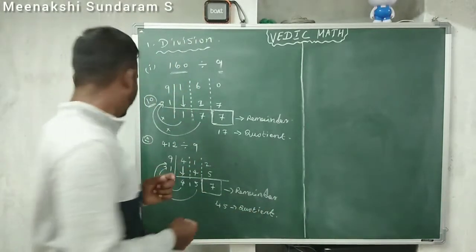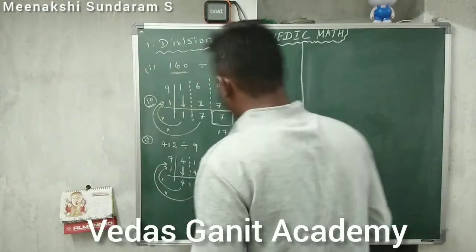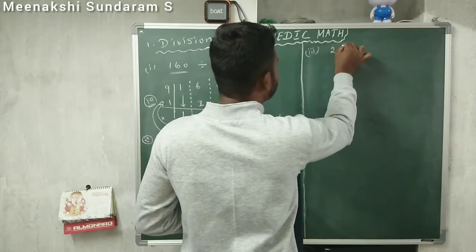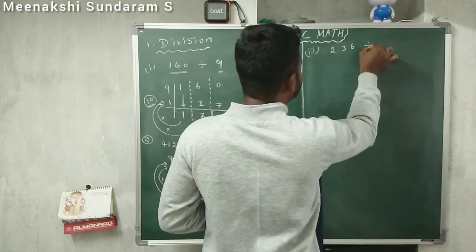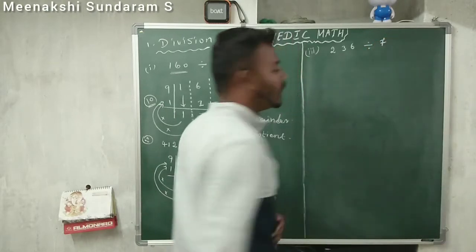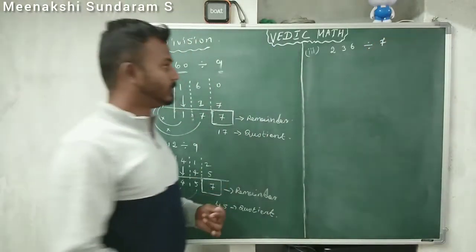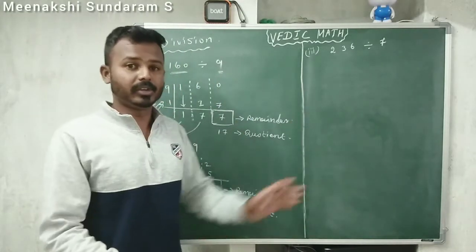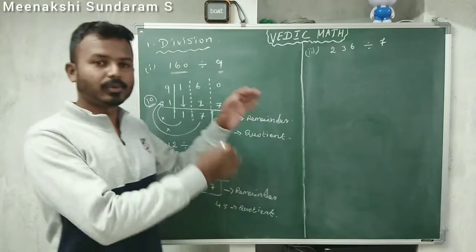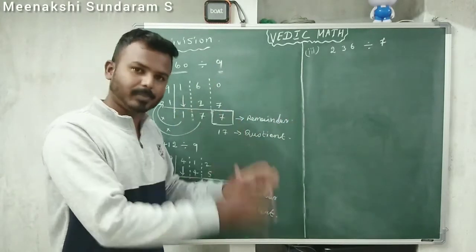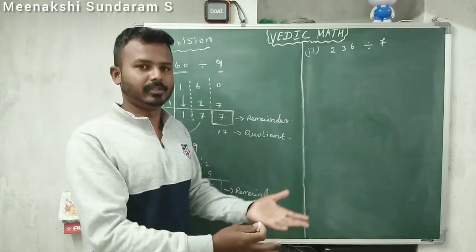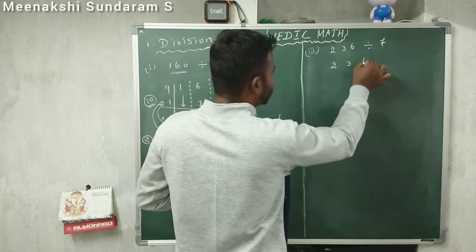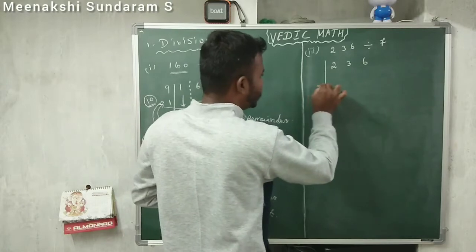We can go with one more example. Third problem: 236 divided by 7. Here we are dividing by a 1-digit number, but we can also go with 2-digit, 3-digit, and 4-digit divisors using the same procedure.